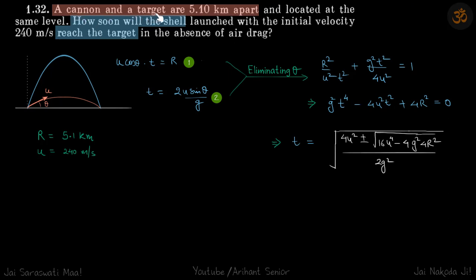We have a cannon and its target that are 5.1 km apart. How soon will a shell reach its target if its velocity is given? So let's say the shell is launched from here and it hits the target here and it's launched with a fixed velocity U.